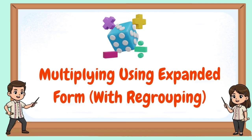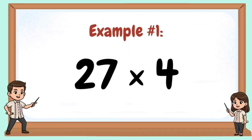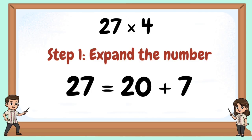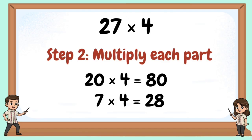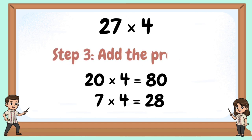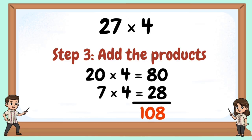Today, we will learn how to multiply using expanded form and how regrouping helps us find the correct answer. Example number 1: 27 times 4. Step 1 — Expand the number: 27 equals 20 plus 7. Step 2 — Multiply each part: 20 times 4 equals 80, 7 times 4 equals 28. Step 3 — Add the products: 80 plus 28 equals 108.